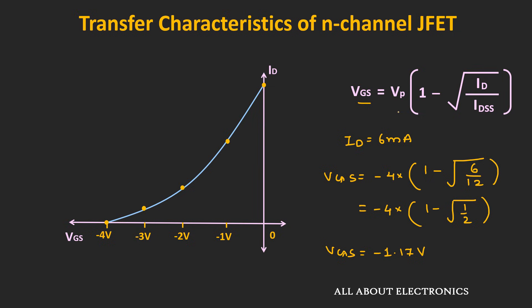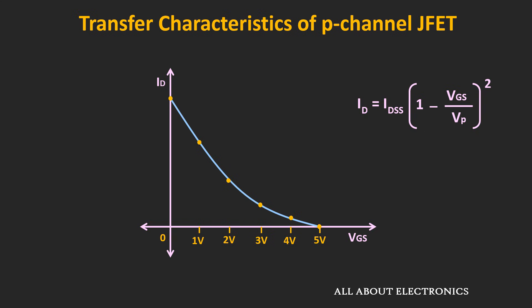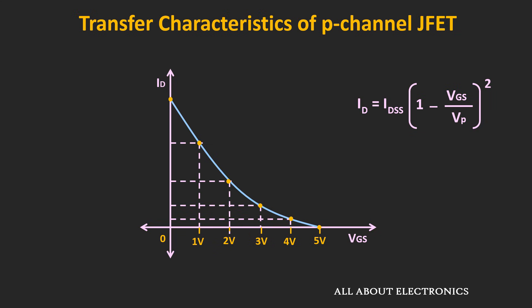So in this way, if we know the value of the drain current Id, then we can find the corresponding value of Vgs using this expression. Now so far, we have only discussed about the transfer characteristic of the N channel JFET. So now similarly, let's see the transfer characteristic for the P channel JFET. In case of the P channel JFET, as the value of Vgs and Vp both are positive, so the transfer curve will be the mirror image of the N channel JFET curve. So if we see the transfer curve for the P channel JFET, then it will look like this. And in this curve, if we know the value of Vgs, then by drawing the vertical line, we can find the intersection point on the curve, and thereby we can find the corresponding value of the drain current. Here, as the voltage Vgs and Vp both are positive, so we can apply the same mathematical expression that we have used for the N channel JFET. And using this, we can find the value of the drain current Id.